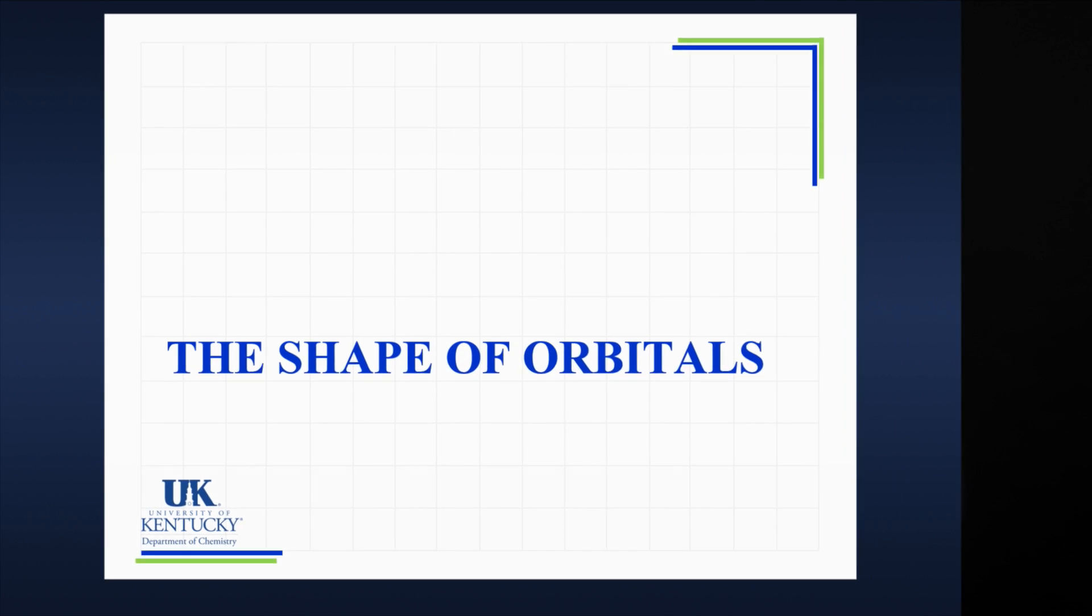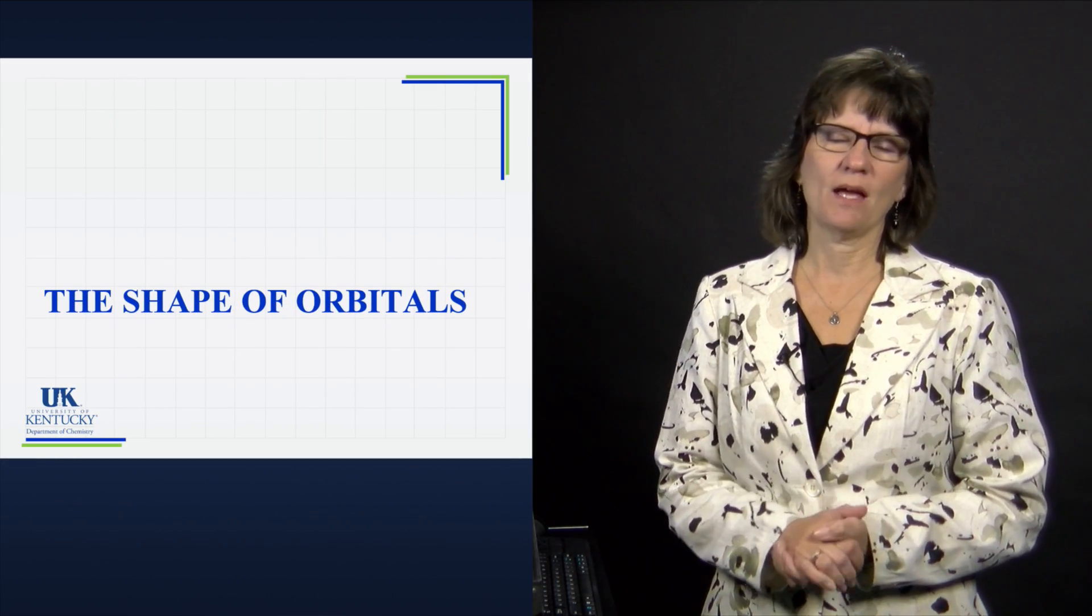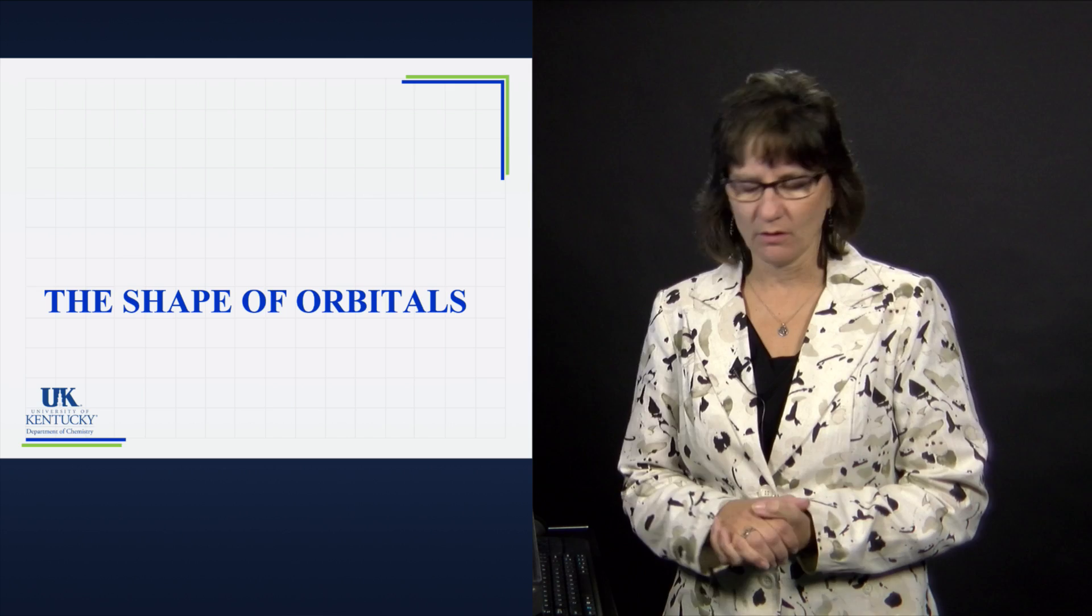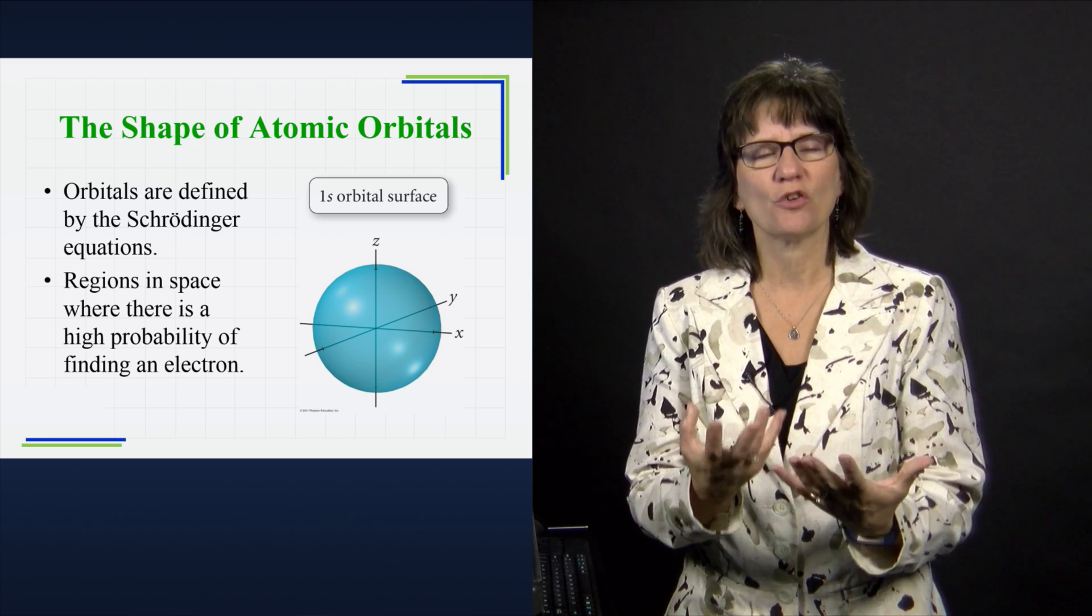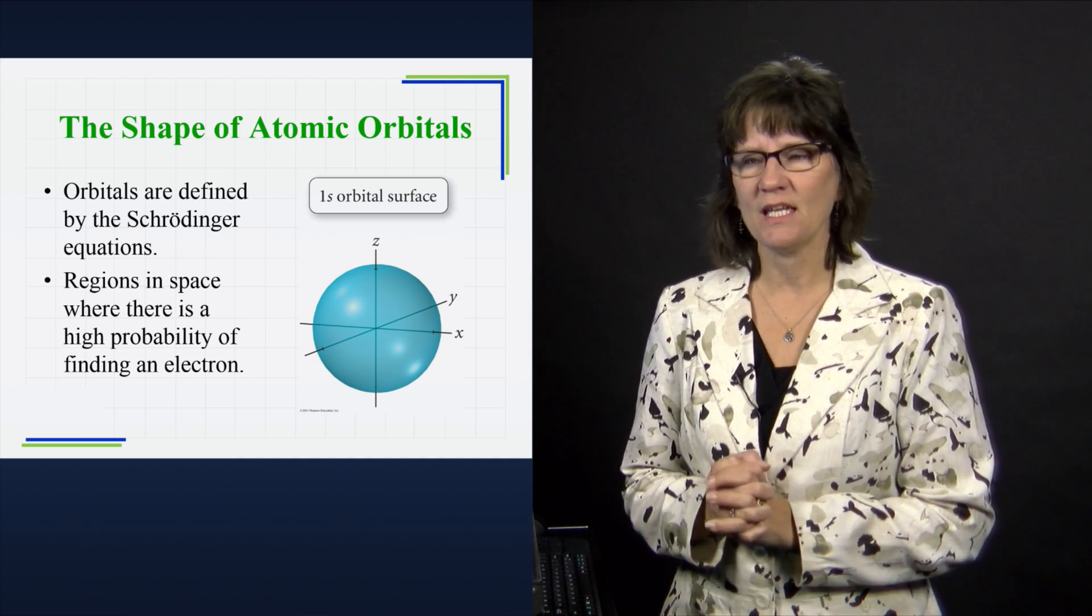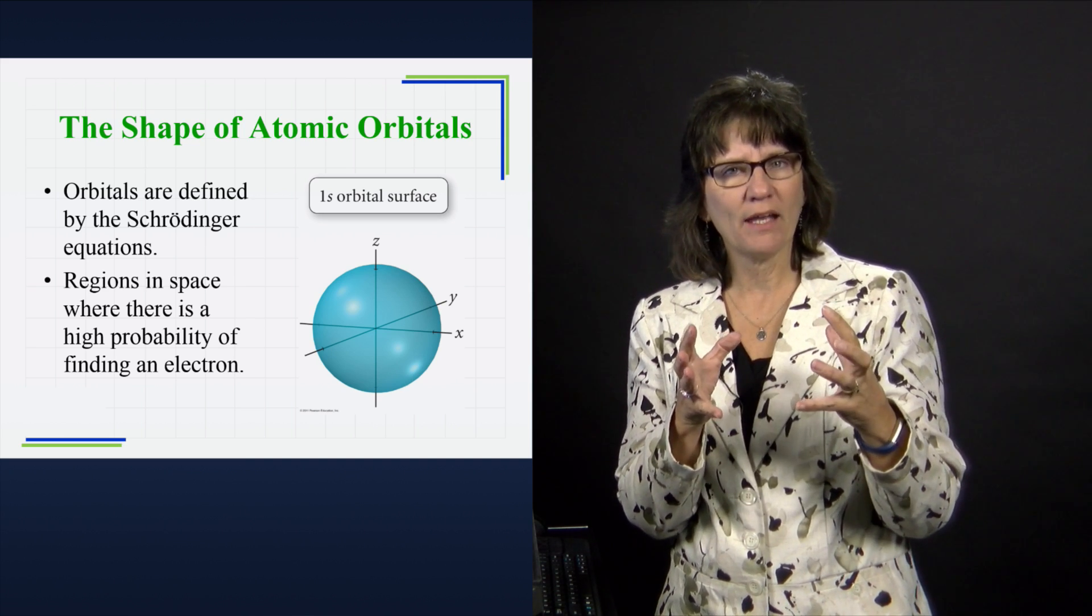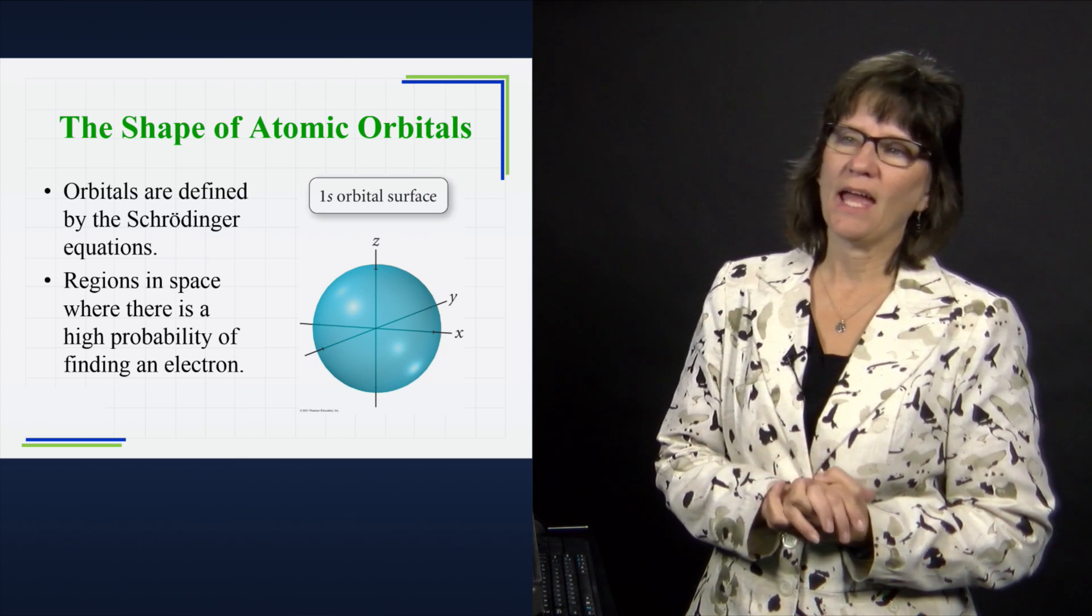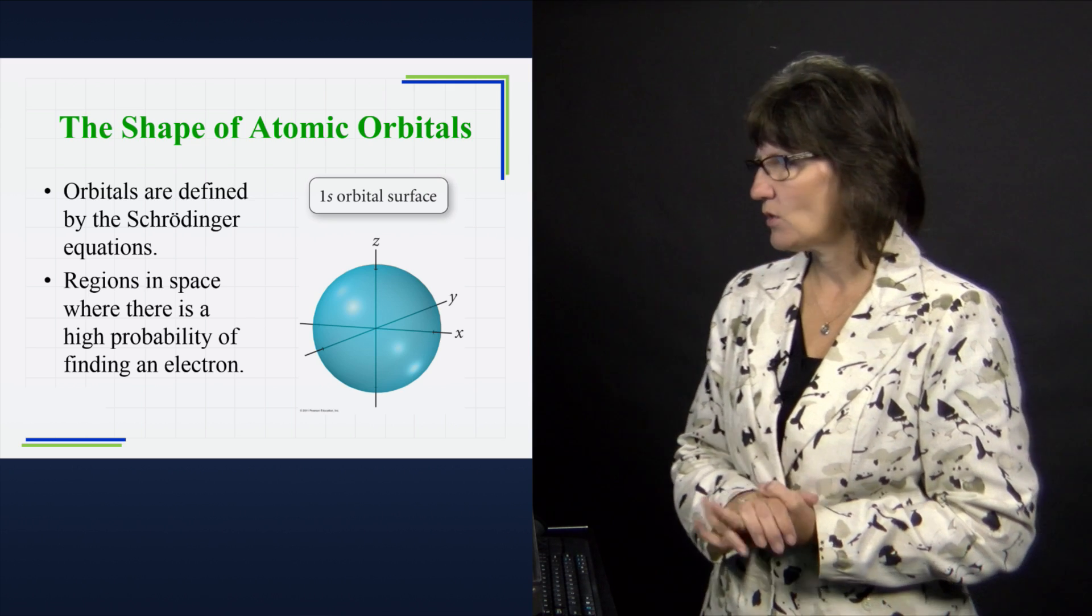So let's finally look at the shapes of the orbitals. I'll bring out models in class so that you can examine closely. But for now, let's just look at the shapes on the screen. We know that the Schrodinger equations from which those quantum numbers came define these regions in space. This first one that we see here is just a surface diagram of that. This is where you have a high probability of finding the electron. We came up with a boundary where the probability drops off and the S orbital is a sphere and that's what it looks like.